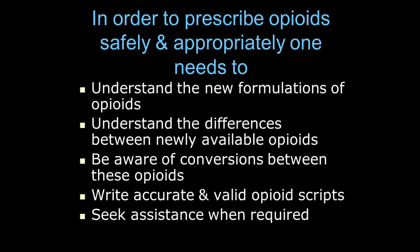In order to prescribe opioids safely and appropriately, you need to understand that there are new formulations — immediate release and sustained release. There's also a whole series of new opioids available and you need to understand the differences between them and be aware of the conversions. For example, hydromorphone is five times as strong as morphine. You need to be able to write accurate and valid opioid scripts, and you need to be able to seek assistance when required — that's probably the most important thing.